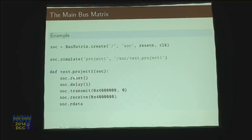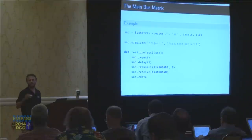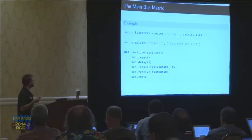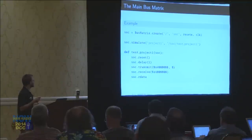Just as an example, here are some of the methods that you can call on this bus: I can reset it, I can delay it — which is kind of like a no-op, just keep ticking along the clock but don't try to do a bus transaction — or I could transmit. In this case I'm transmitting to this address the number zero. I could receive at that address, and then the result gets put in this method called rdata.